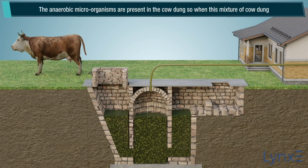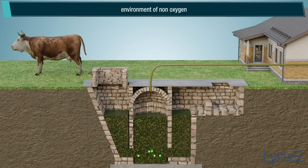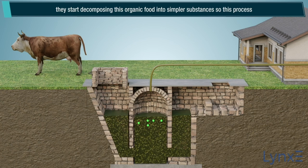The anaerobic microorganisms are present in the cow dung, so when this mixture of cow dung and water, known as slurry, moves into the digester, the microorganisms get activated and they get an environment with no oxygen. These microorganisms get activated due to the non-availability of oxygen in the digester and they start decomposing this organic matter into simpler substances.